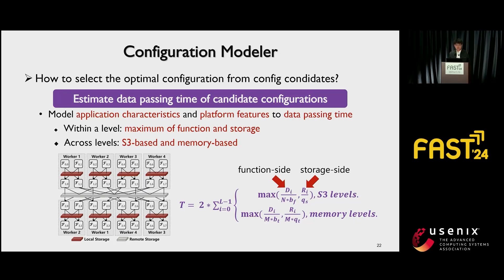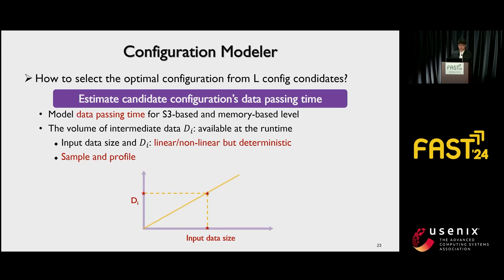For the configuration modeler, the key challenge is how to select the optimal configuration from config candidates. We estimate the passing time of candidate configurations to find the optimal config. Specifically, we model analytics application characteristics and the serverless platform features to estimate data passing time. Because the data passing time of functions and storage are overlapping, we use the maximum of them to model the data passing time for each communication level. Because we employ interleaved local memory and remote storage transmission media, we use different models to estimate passing time for S3-based and memory-based levels. Among the parameters, the volume of intermediate data DI is only available at runtime.